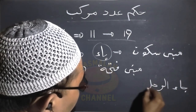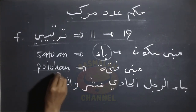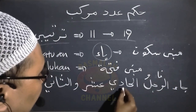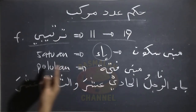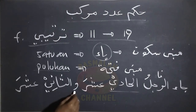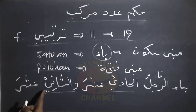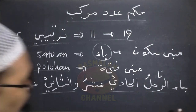Jadi untuk satuan di dalam adat murokab yang masuk dalam kategori tartibi, manakala satuannya diakhiri oleh ya maka dihukumi mabni sukun. Untuk puluhannya semuanya dimabnikan fathah. Contohnya seperti lafaz: Ja'a Ar-Rojulu Al-Hadi Asyarah Watthani Asyarah — datang orang laki-laki yang kesebelas dan yang kedua belas. Kita perhatikan lafaz Al-Hadi dan lafaz Ats-Tsani, ini adalah merupakan satuan dalam adat murokab yang tartibi, dimana satuannya diakhiri oleh ya, maka dimabnikan sukun baik dalam keadaan rafa', nasob, maupun jer.